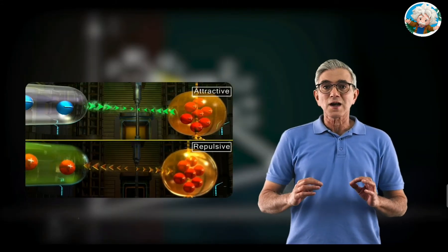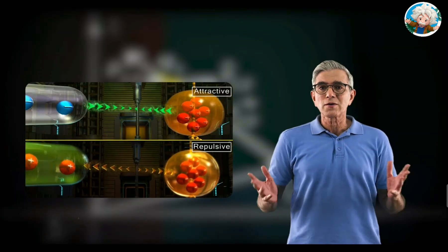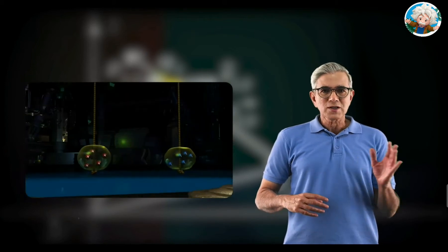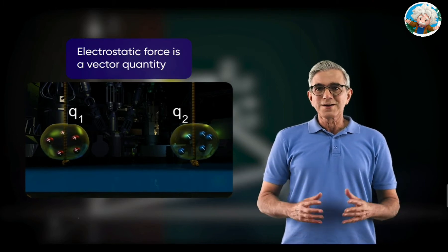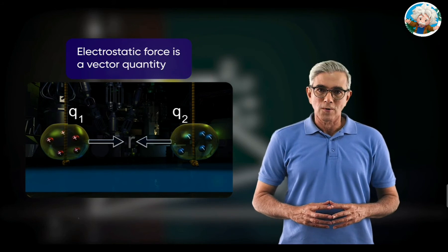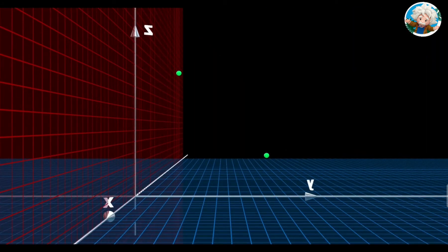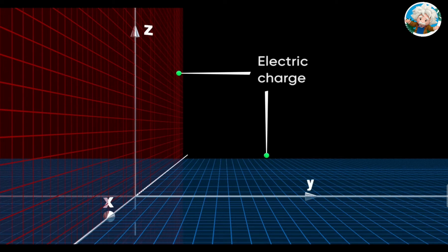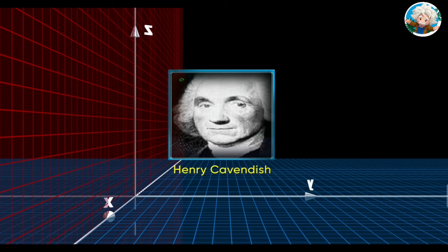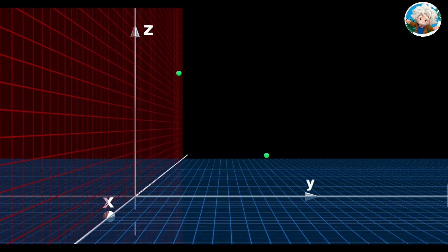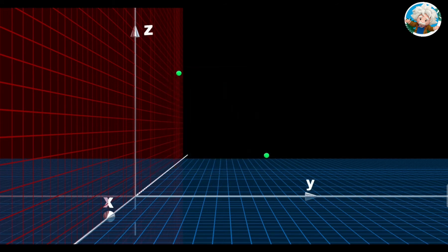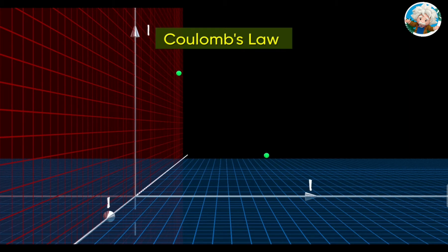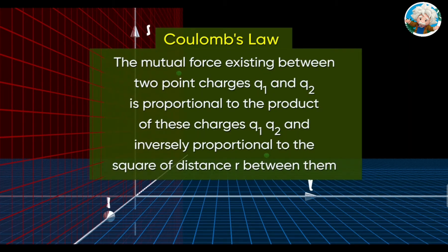Electric charges can exert either an attractive or a repulsive force on each other. Just like every other force, this force is a vector quantity. Let us learn to derive the vector form of Coulomb's law. The law of force existing between two electric charges was established from the results of experiments performed by Henry Cavendish in 1772 and Charles Augustine Coulomb in 1785. This law is known as Coulomb's law.